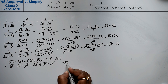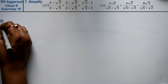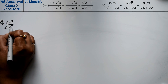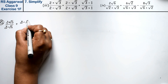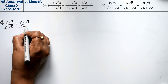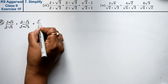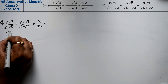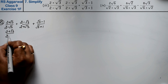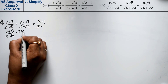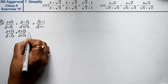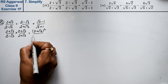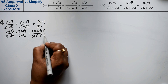Let's do the third part. Part 3 is: (2 + √3)/(2 - √3) + (2 - √3)/(2 + √3) + (√3 - 1)/(√3 + 1). We rationalize each separately. For (2 + √3)/(2 - √3), multiply top and bottom by (2 + √3). The denominator is 2² - (√3)² = 4 - 3 = 1.